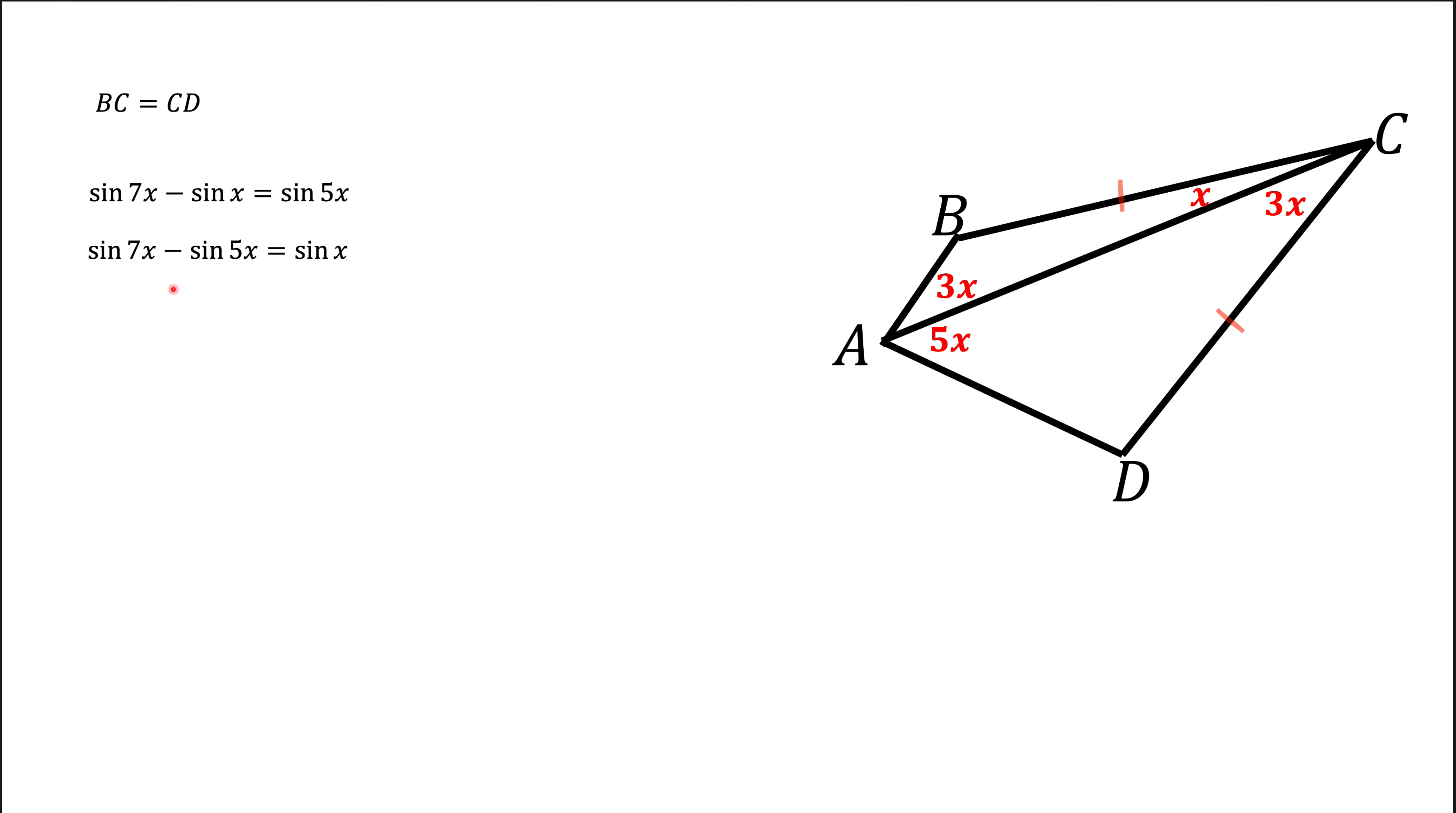The next thing, remember the difference of sine formula: it's 2 times cosine of half sum times sine of half difference. If we apply that formula, we're going to get 2 cosine of 6x times sine of x.